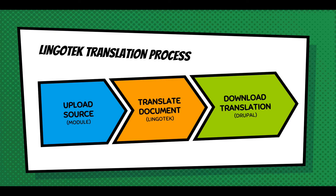The process with Linguatech is: you install the module, then upload the source — which could be a node, a web form, or any content on your site that needs translating. It goes into Linguatech, which refers to everything coming in as a document. It's translated using either machine translation or a professional translator, and once it's ready, you download the translation back into Drupal.